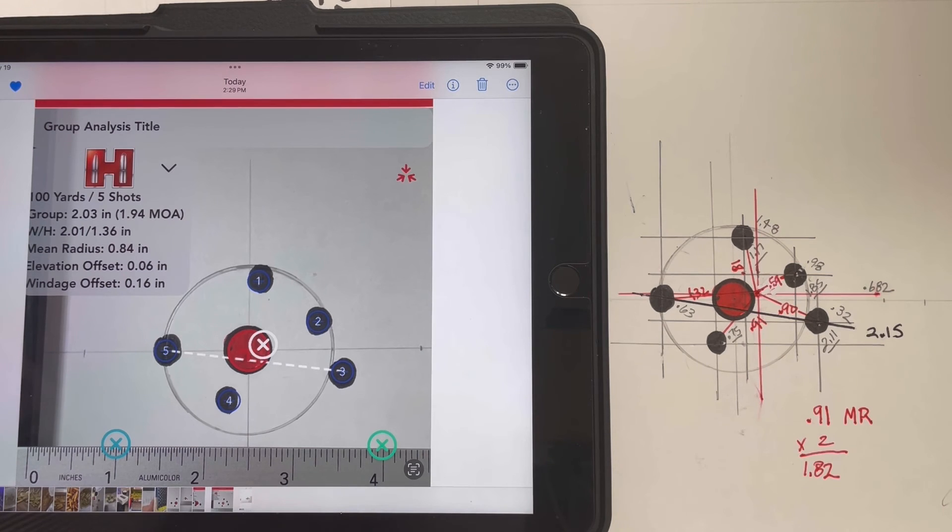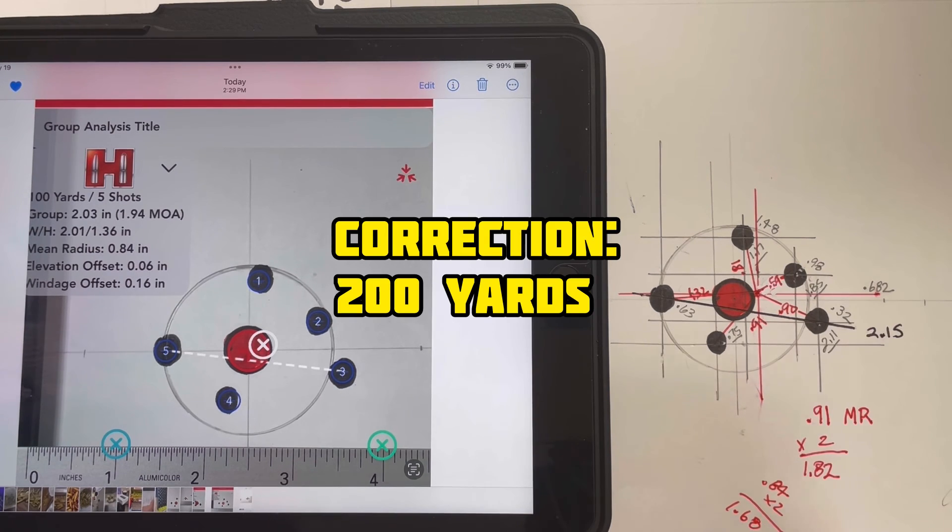Nevertheless, they're close. And when you're measuring to the hundredth of an inch, in this case, 0.91 to 0.84, I'm 0.07 of an inch off. So, that's pretty close in my opinion. But in any event, the mean radius I measured was 0.91. They're showing that at 0.84. And a radius is half of a circle. So, if you were to double that on this, that would mean you would have a 1.82 average group at 200 yards. Or, if you took their measurement of 0.84 and doubled it, that gives you 1.68 inches at 100 yards.